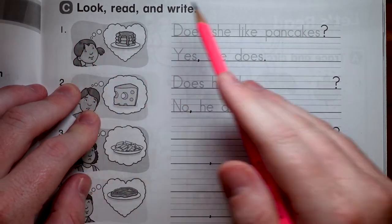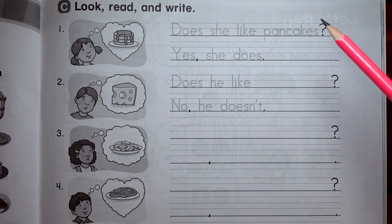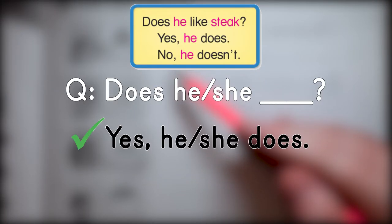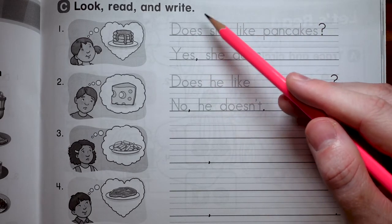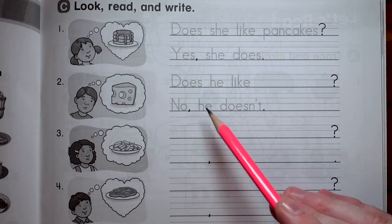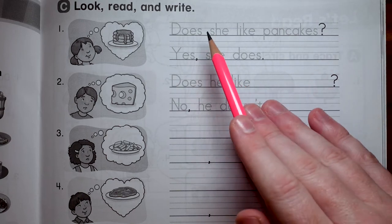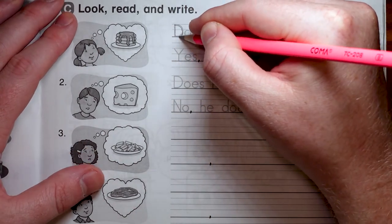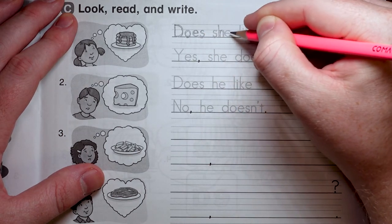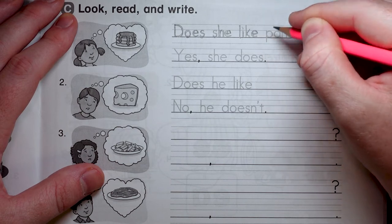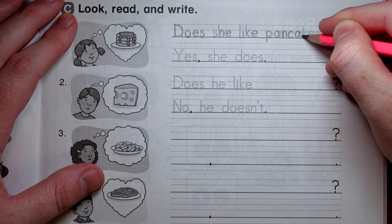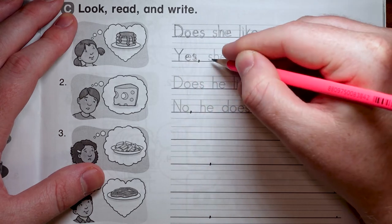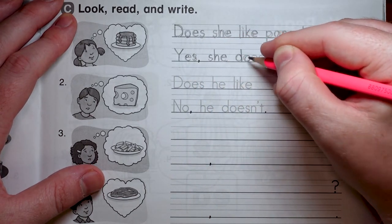Okay, this is part C. And it says look, read and write. And we have to make a yes, no question. And then the answer. So quickly, let's remember the yes, no question. Good. We're gonna make a question with does. So our answers can only be yes does or no doesn't. Number one is just tracing. So I'll read it and trace it. Does she like pancakes? She's very happy. Yes, she does. Let's write it. D-O-E-S space. S-H-E space. L-I-K-E space. P-A-N-C-A-K-E-S. Does she like pancakes? Yes, she does. Yes, she does.